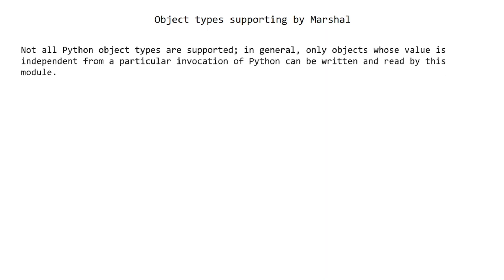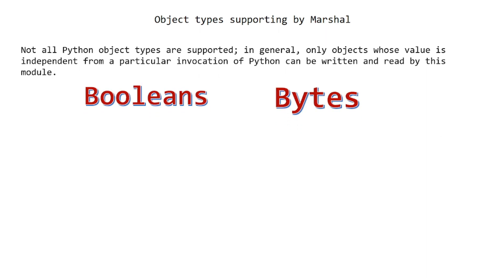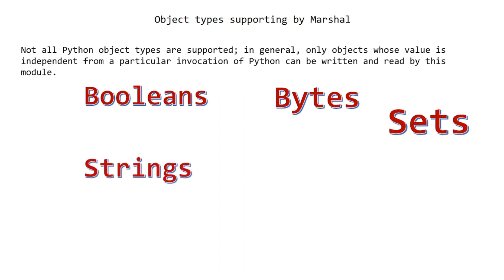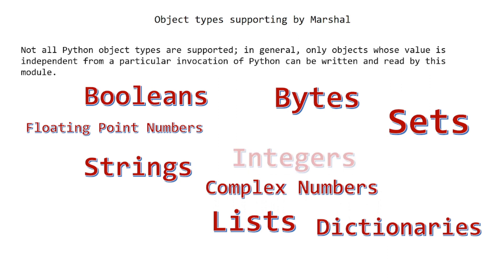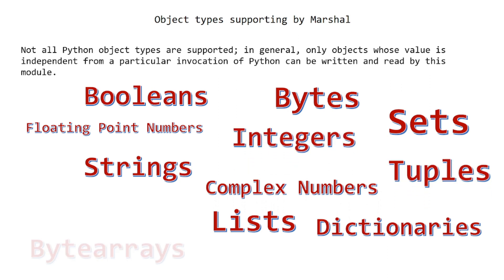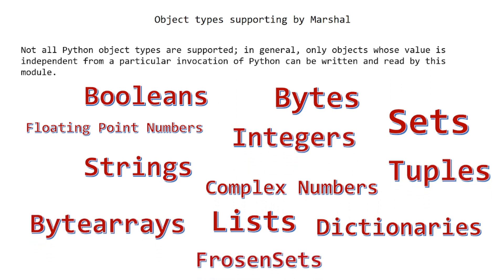Object types supported by Marshall. Not all Python object types are supported. In general, only objects whose value is independent from a particular invocation of Python can be written and read by this module. Supported types include: Booleans, Bytes, Sets, Strings, Lists, Dictionaries, Floating point numbers, Complex numbers, Integers, Tuples, Byte arrays, and Frozen sets.